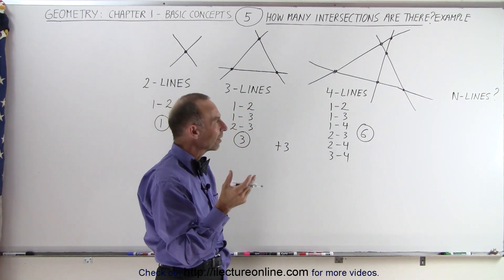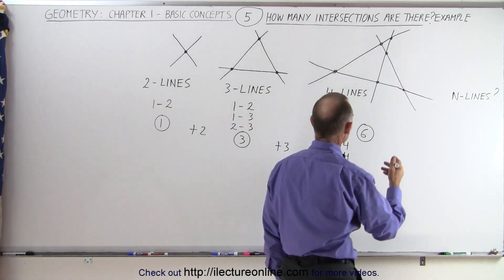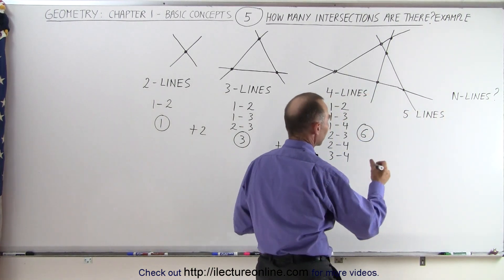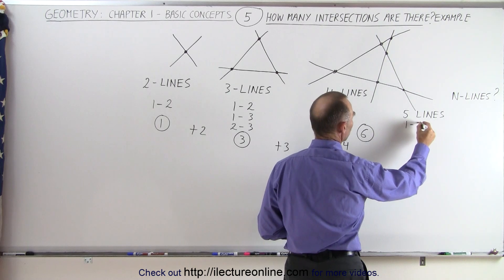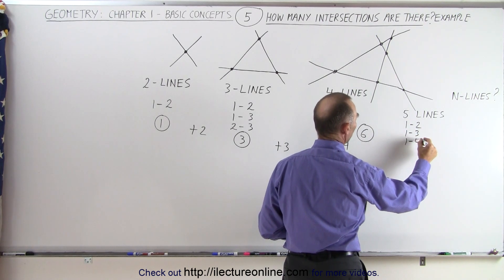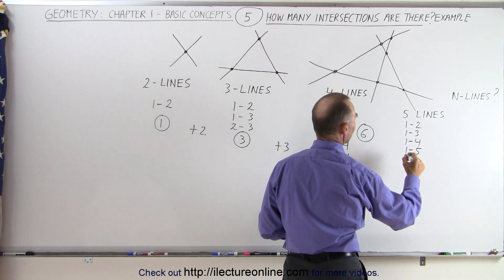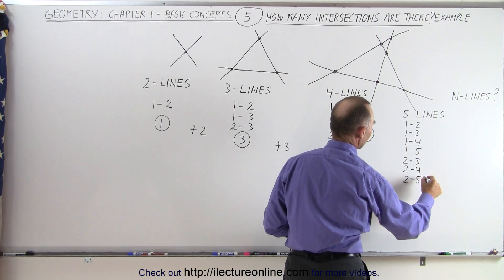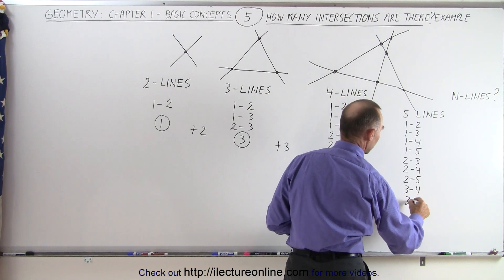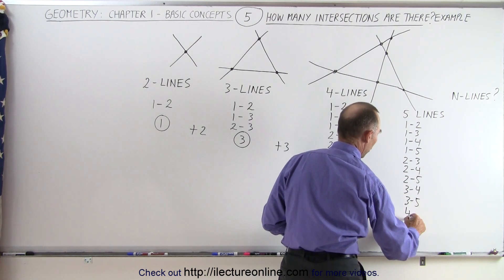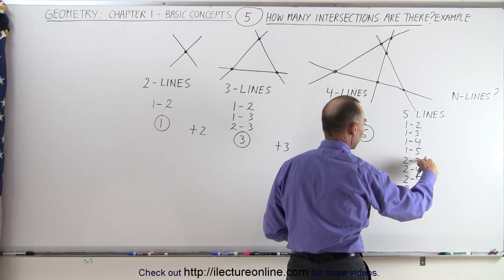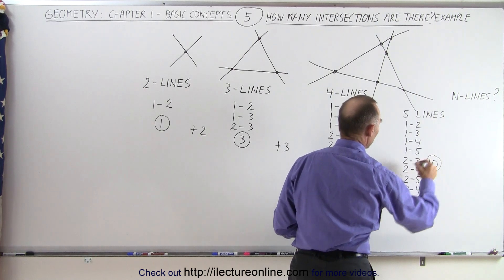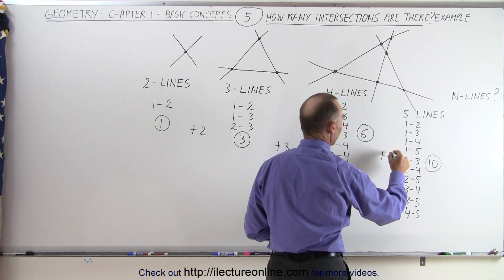Let's try five lines. With five lines we have: 1 and 2, 1 and 3, 1 and 4, 1 and 5, then 2 and 3, 2 and 4, 2 and 5, then 3 and 4, 3 and 5, and finally 4 and 5. Counting those up: 1, 2, 3, 4, 5, 6, 7, 8, 9, 10. So that's 10 intersections — notice we go plus 4.